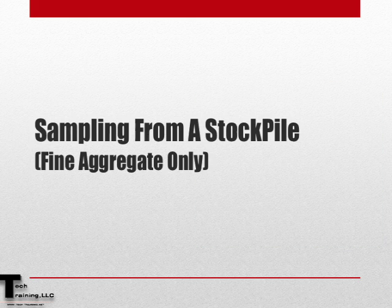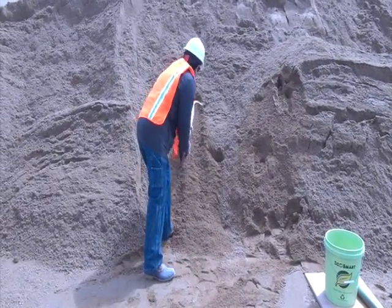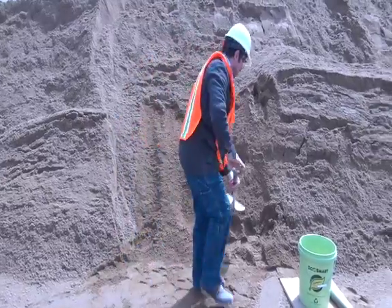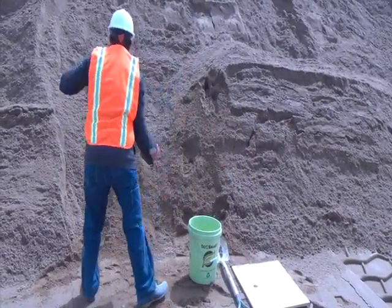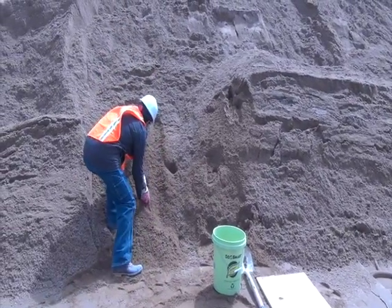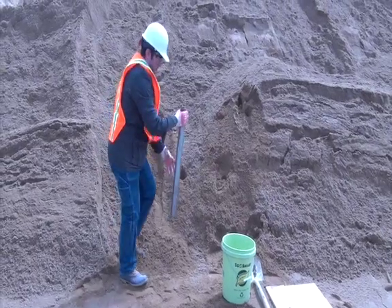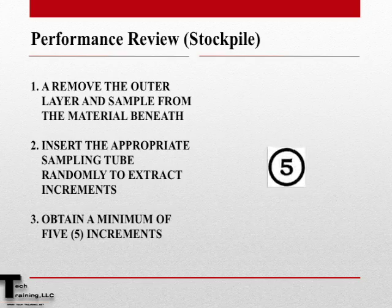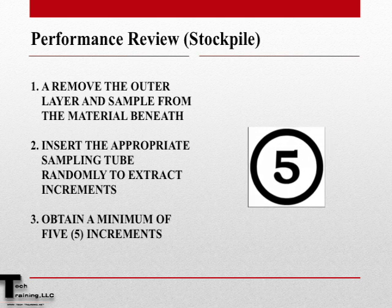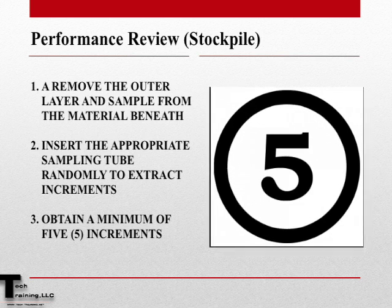Now let's review sampling from a stockpile. This is for fine aggregate only. First, remove the outer layer of the stockpile to expose the material underneath. You can use a shovel or power equipment to achieve this. Insert the appropriate sampling tube. And, unlike the other procedures, when sampling from a stockpile, you obtain at least five increments.